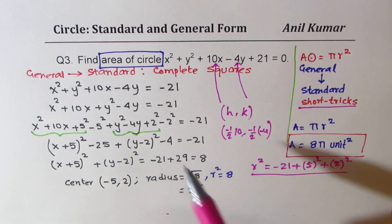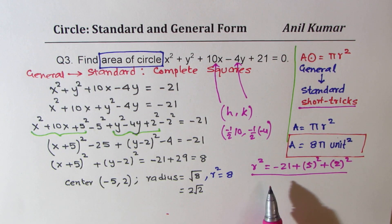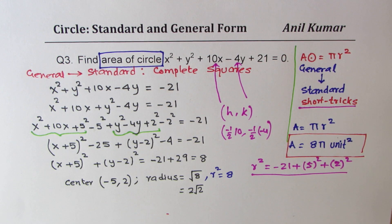This shortcut method is useful, especially in multiple choice questions, though the full steps don't take long either. I hope the steps are absolutely clear and you appreciate how the equation of a circle in standard form can be used to answer many related questions. We'll take more exercises on conversion between general and standard form. Feel free to write your comments, share your views, and if you like and subscribe to my videos, that'd be great. Thanks for watching and all the best!